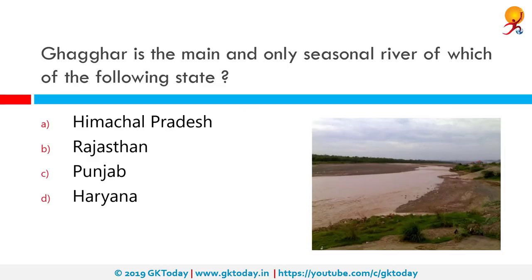Ghaggar is the main and only seasonal river of which state? The correct answer is Haryana. The Ghaggar is an intermittent river in India flowing only during monsoon rains. It originates in the Shivalik hills of Himachal Pradesh and flows through Punjab and Haryana into Talwara Lake in Rajasthan.